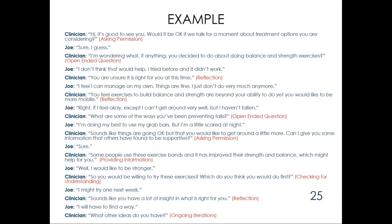Here's an example of a conversation using MI. The clinician says: 'Hi, it's good to see you. Would it be okay if we talked for a moment about treatment options you're considering?' — which is asking permission. Joe says: 'Sure, I guess.' The clinician says: 'I'm wondering what, if anything, you decide to do about balance and strength exercises.' — that's an open-ended question. Joe says: 'I don't think that would help. I tried before and it didn't work.'